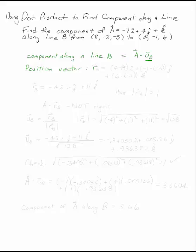So the position vector R along line B is going to be 2 minus from, so 4 minus 8i plus -1 minus negative 2j plus 6 minus negative 5k.